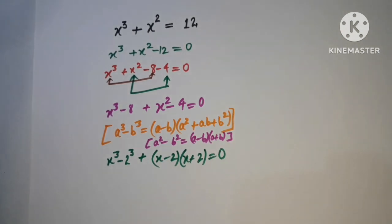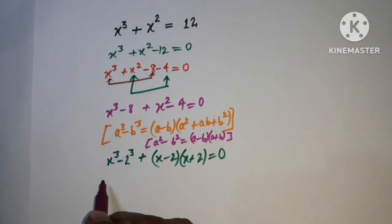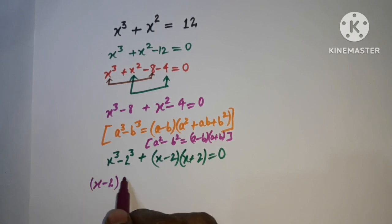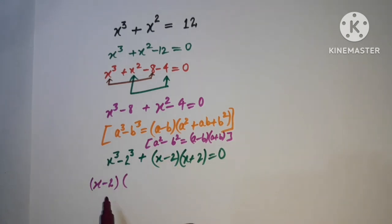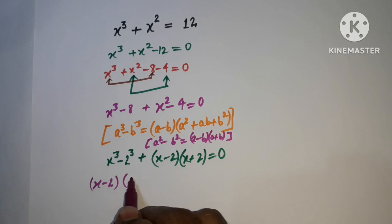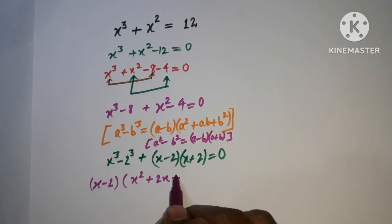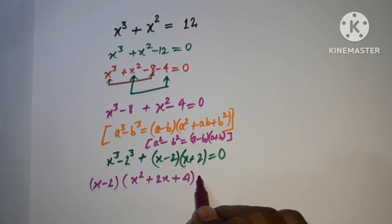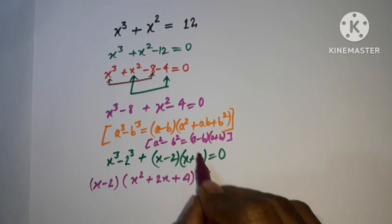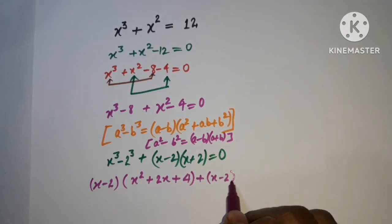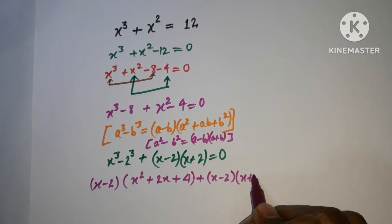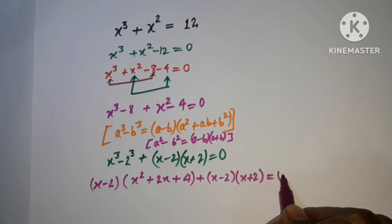Applying the factorization, we get: (x - 2)(x² + 2x + 4) + (x - 2)(x + 2) = 0.